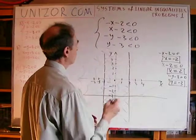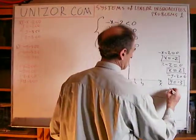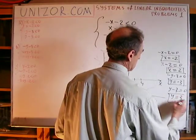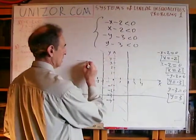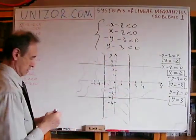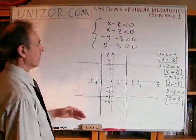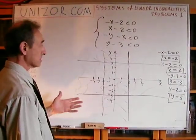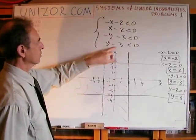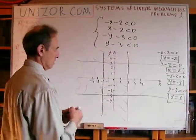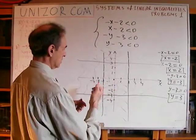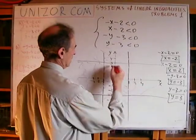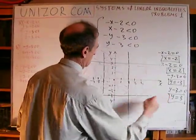Finally, y minus 3 equals 0 gives y equals 3. This horizontal line divides the coordinate plane into upper and lower parts. Substituting (0,0) gives a true statement, so (0,0) is in this region, which means we are interested in the lower part — below y equals 3.